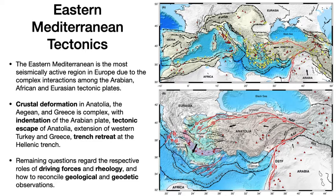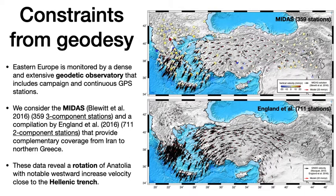To shed new light on the kinematics of this complex plate boundary, we consider new constraints from geodetic data. Eastern Europe is monitored by a dense and extensive geodetic observatory that includes campaign and continuous GNSS stations. We consider the MIDAS GNSS dataset from Blewitt and co-authors, which includes close to 363 component stations, and also a compilation by Nocquet and England of 702 component stations, together providing complementary dense coverage from Iran to western Greece.